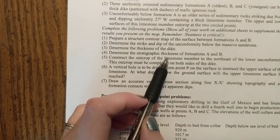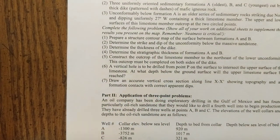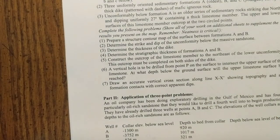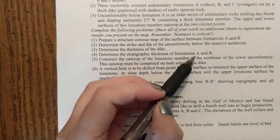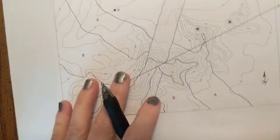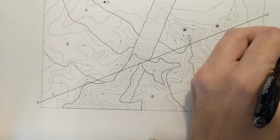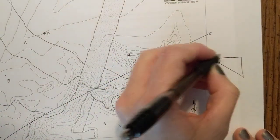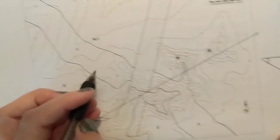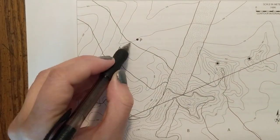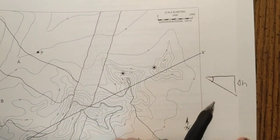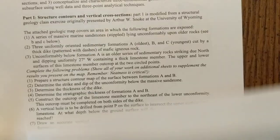To determine the stratigraphic thickness of formations A and B, we already know the dip from section one. Using the dip angle and the height difference between the upper and lower contacts, you apply trigonometric functions to calculate the true thickness of each unit.